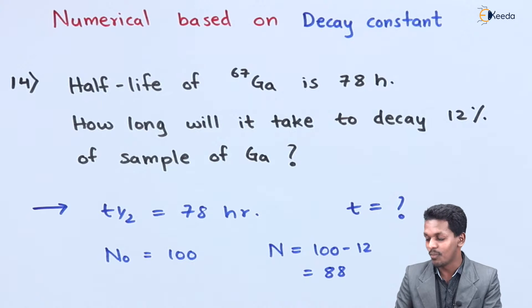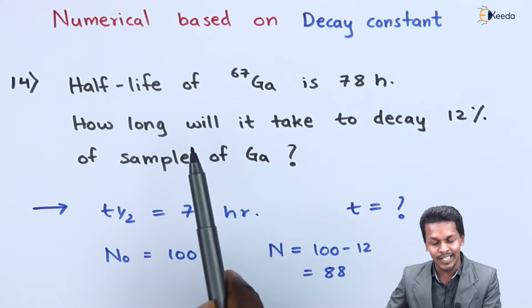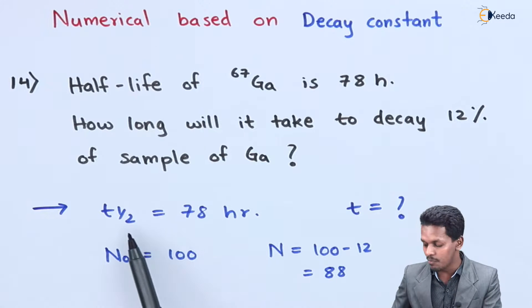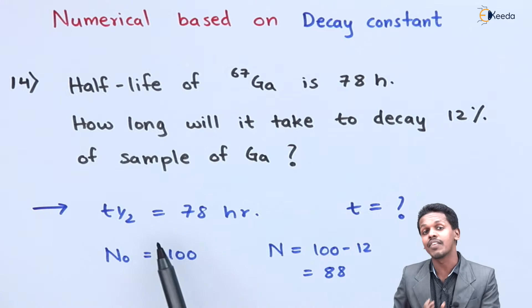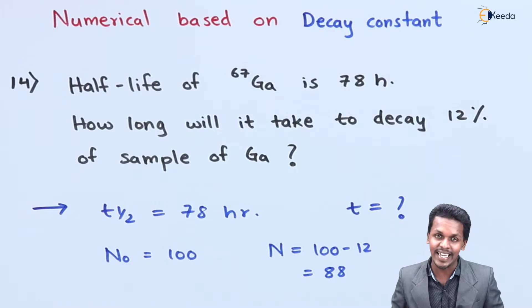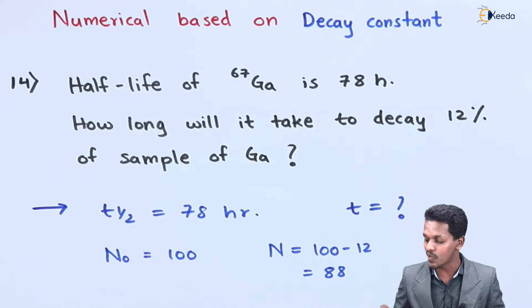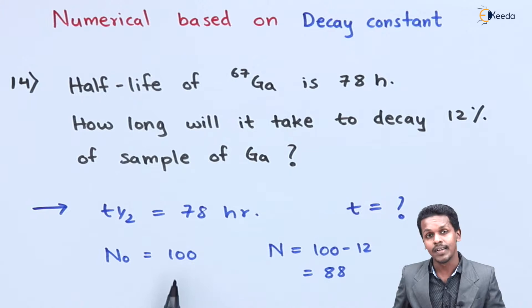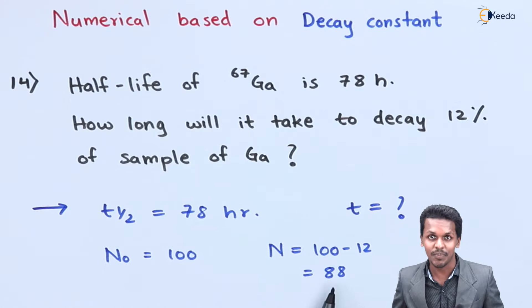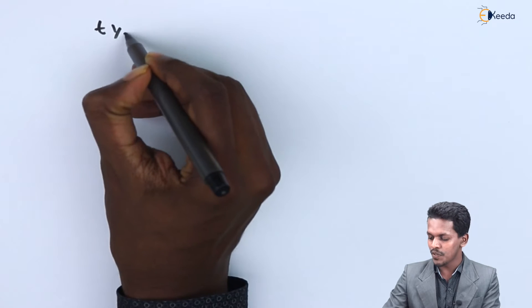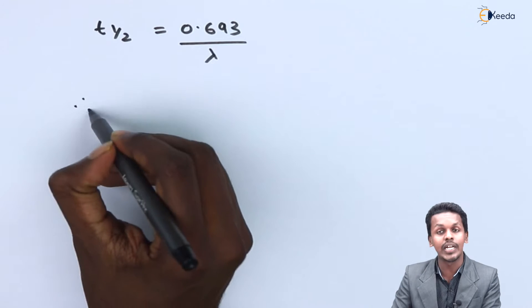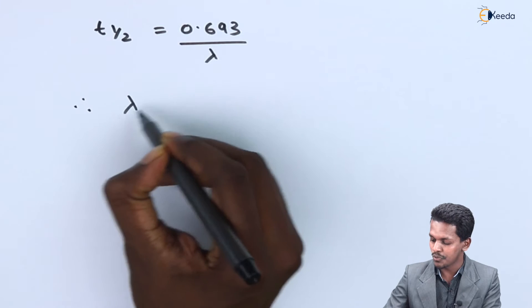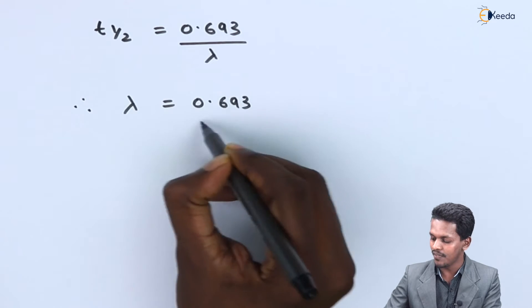So we have T half, N0, and N, and we need to calculate the time. We can first estimate the decay constant lambda, then use it to find the time required to go from 100% to 88% of the sample. The formula is: T half = 0.693 divided by lambda. Therefore lambda = 0.693 divided by T half.